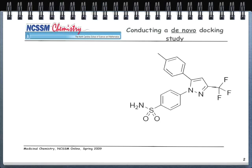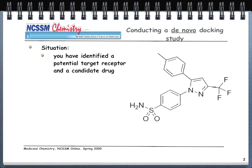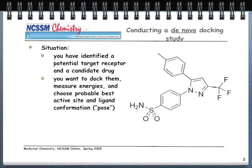What we want to talk about here is conducting a de novo docking study — de novo meaning from scratch or from the beginning. We've identified a potential target receptor and through QSAR studies and other computational and experimental methods we have a candidate drug. What we want to do is dock the receptor and the candidate drug, measure some of their energies, and choose a probable best active site and ligand conformation or pose. We're going to have a fairly large receptor with multiple active sites and see for a given ligand which of the active sites is the most probable target.